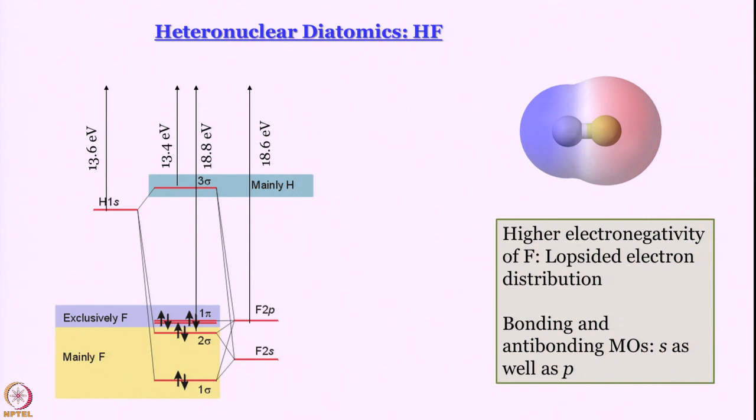So, what we encounter is a lopsided electron distribution. Look at the electron configuration. Where are the electrons? I have 1 electron from hydrogen, 7 electrons from fluorine. And once you start filling them in, there is no memory. You just fill them in the increasing order of energy for molecular orbitals. So, all the electrons are in either bonding or non-bonding orbitals, which are either mainly fluorine orbitals or exclusively fluorine orbitals.